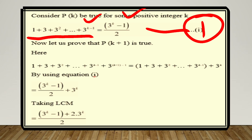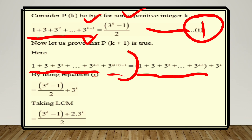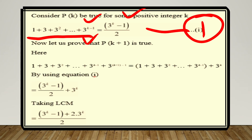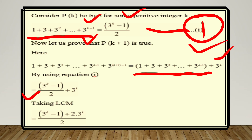Now we check for k+1. Our series goes up to k: 1 + 3 + 3² + ... + 3^(k-1). If we take one more term, the next power of 3 increases by one, so the added term is 3^k. So LHS for k+1 becomes: 1 + 3 + 3² + ... + 3^(k-1) + 3^k. The part from the first term to 3^(k-1) equals (3^k - 1)/2 from equation 1, and we write the extra 3^k as it is.